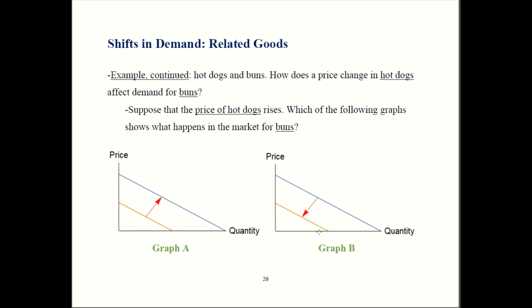So when hot dogs get more expensive, consumers buy fewer hot dogs. As a result, they also start buying fewer hot dog buns. Graph B is the right answer. That's how that example works.